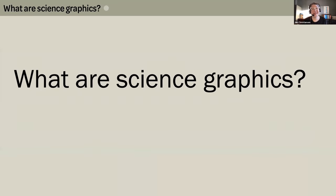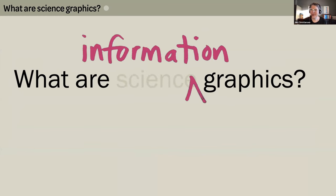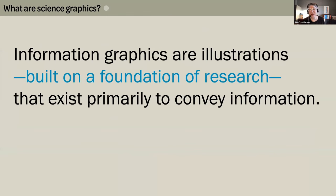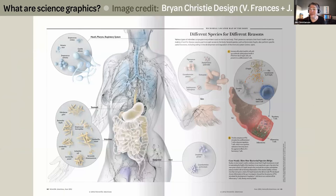So what are science graphics? I generally use 'graphics' as shorthand for 'information graphics.' By my definition, information graphics are illustrations built on a foundation of research that exist primarily to convey information. For example, here's an information graphic from Scientific American where the team at Brian Christie Design used visual symbols to convey specific information rooted in research — showing that a variety of microbe types reside in specific parts of the human body, and how one microbe interacts with the body.